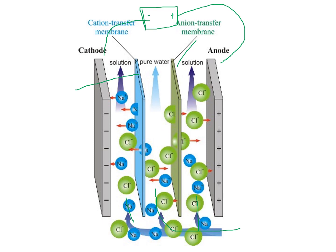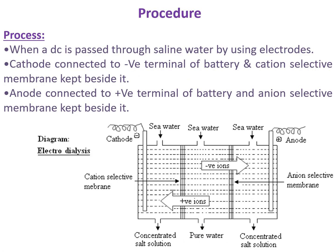By using electricity and ion selective membranes, we convert salt water into pure water — this method is called electro dialysis. Consider a tank separated into three chambers by two ion selective membranes: one cation selective membrane and one anion selective membrane. All three chambers are filled with salt water.